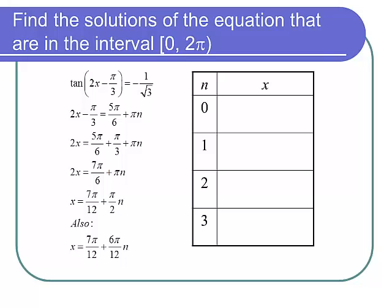Now, normally tangent is equal to negative 1 over square root of 3 twice between 0 and 2π. And I see a 2 out there in front of the x there in my parentheses. I'm expecting double the number of answers. I'm expecting there to be 4 solutions between 0 and 2π that make this a true statement. So that's what I'm expecting to have happen.